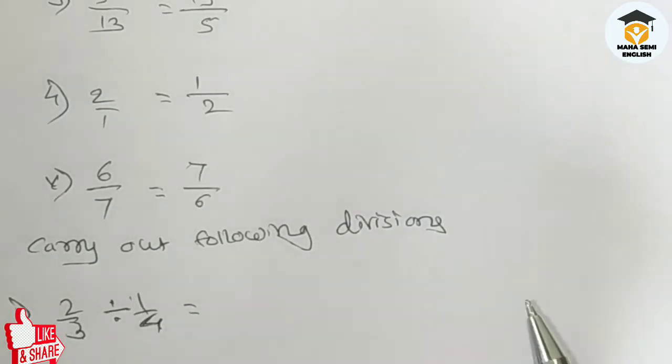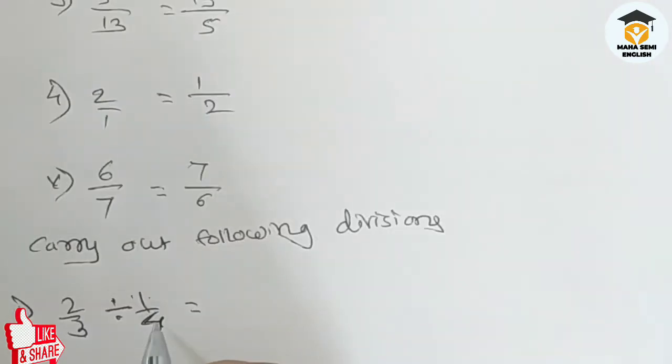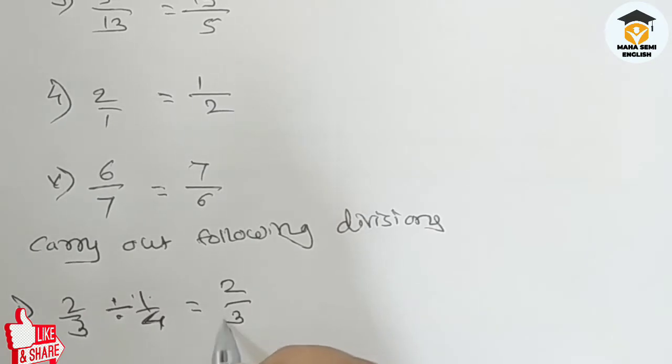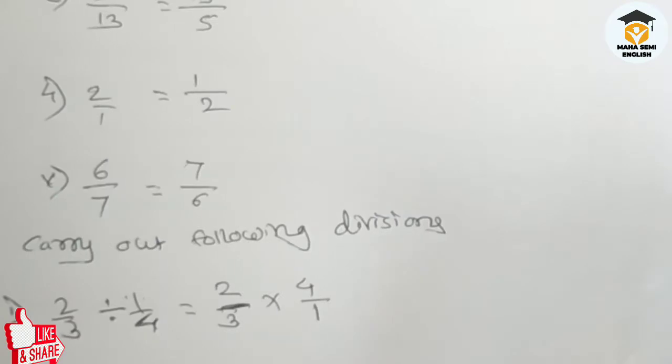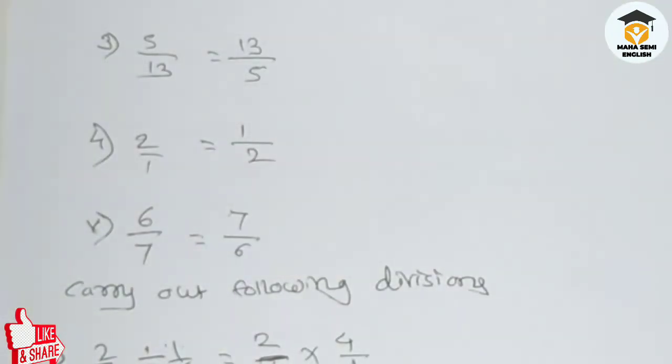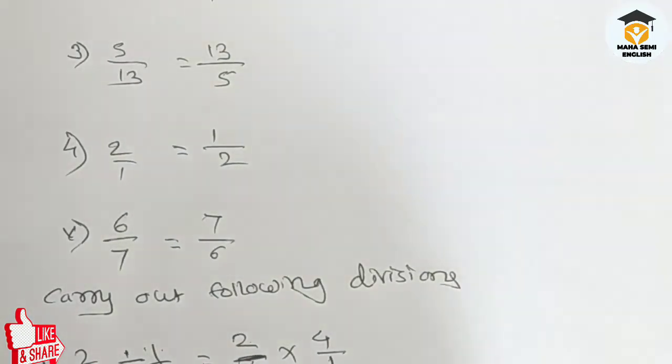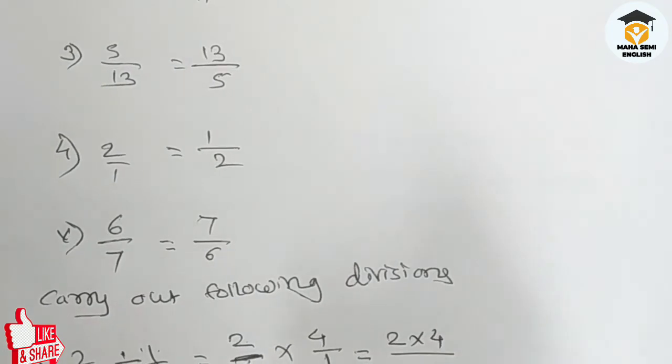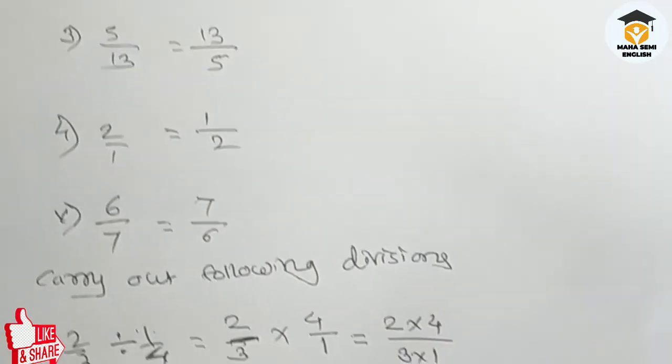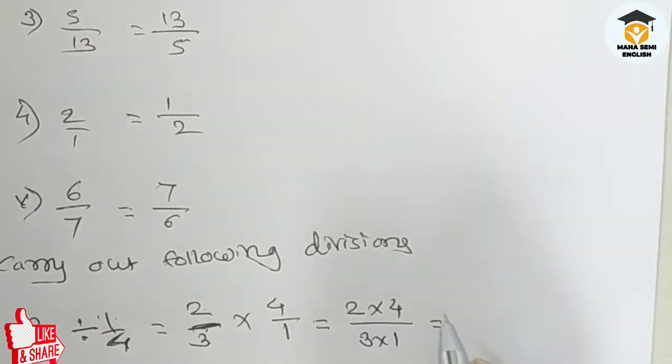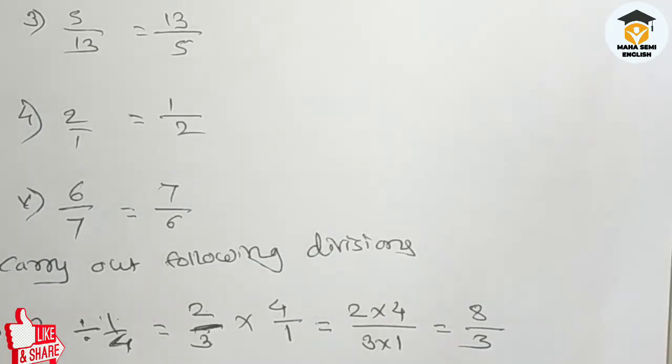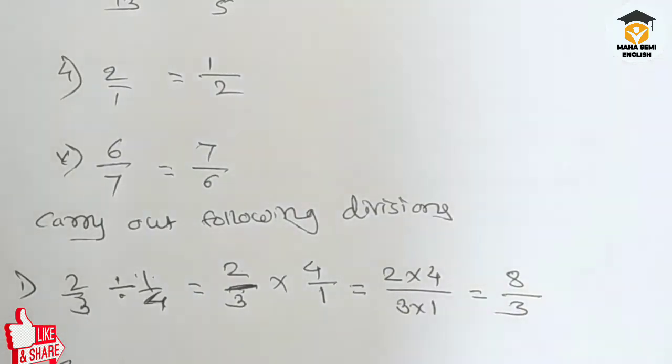So we have 2 upon 3 divided by 1 upon 4. We take the reciprocal and multiply. We have 2 upon 3 multiply by 4 upon 1. Multiplication means numerator into numerator and denominator into denominator. Four into two equals eight, three into one equals three. So this is the answer of this division.